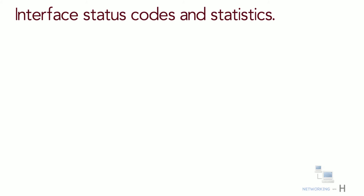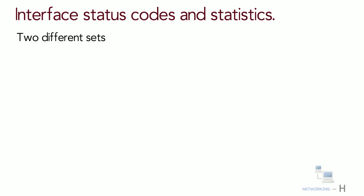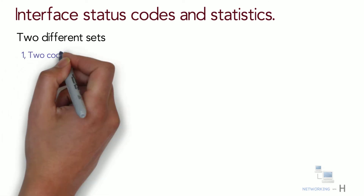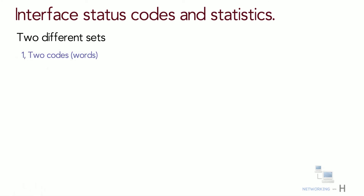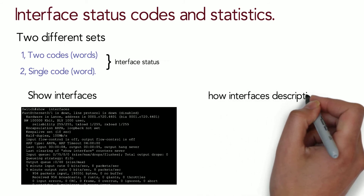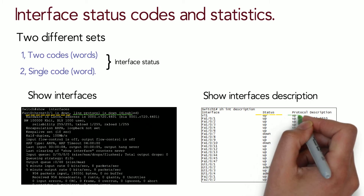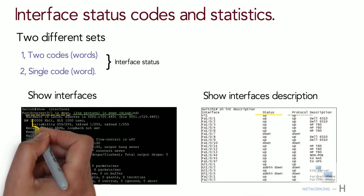Cisco switches actually use two different sets of interface status codes. One set of two codes uses the same conventions as router interface status codes, and another set with a single code word. Both sets of status codes can determine whether an interface is working. The show interface and show interface description commands list the two-code status names: the line status and the protocol status.